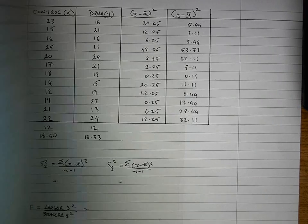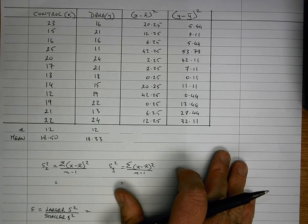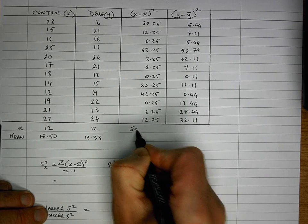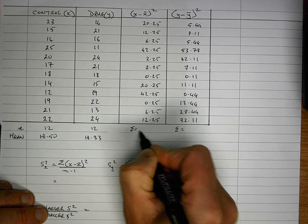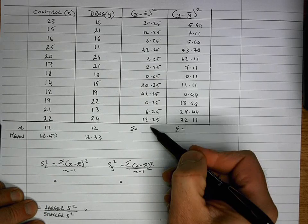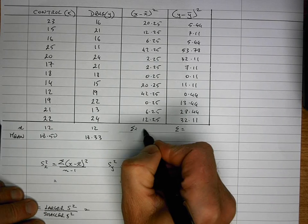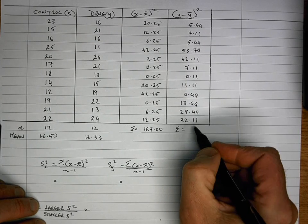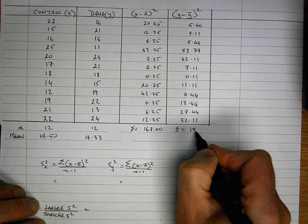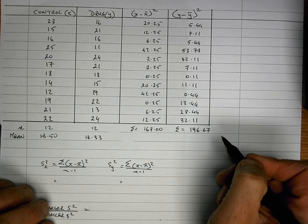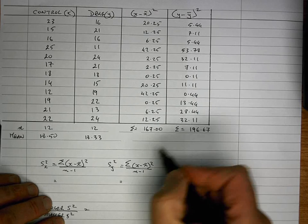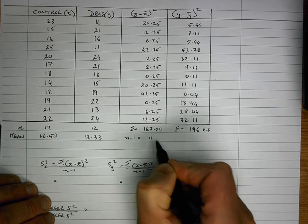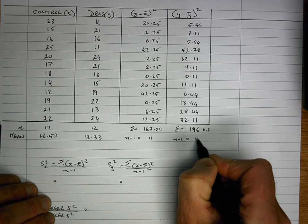So when I've done that, I get all my statistics, all my values calculated here. And now the next thing I need to do is I need the sum of each of these columns. So using the sigma equals for the sum sign. So when I add up all of these values here, I get a result of 167.00. And I add up all the sum of the y minus y bar squared. I get a value of 196.67. I also need in my formula n minus 1. So n minus 1 here is equal to 11. So it's going to be 12 minus 1. And n minus 1 here is also equal to 11.